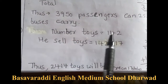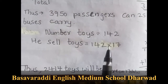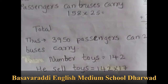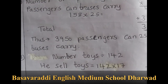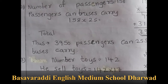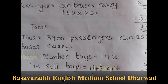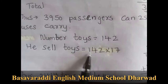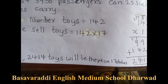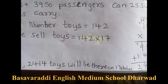Third one: There are 142 toys on a shelf in a toy shop. How many toys will there be on 17 such shelves? So 142 into 17. The answer is 2414 toys on 17 shelves.